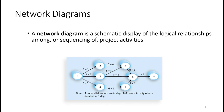Typically, network diagrams actually start from the left and then end on the right. There will be at least one starting point which will be the start of all of the activities, and towards the end there will be one activity that will be the end of the project.